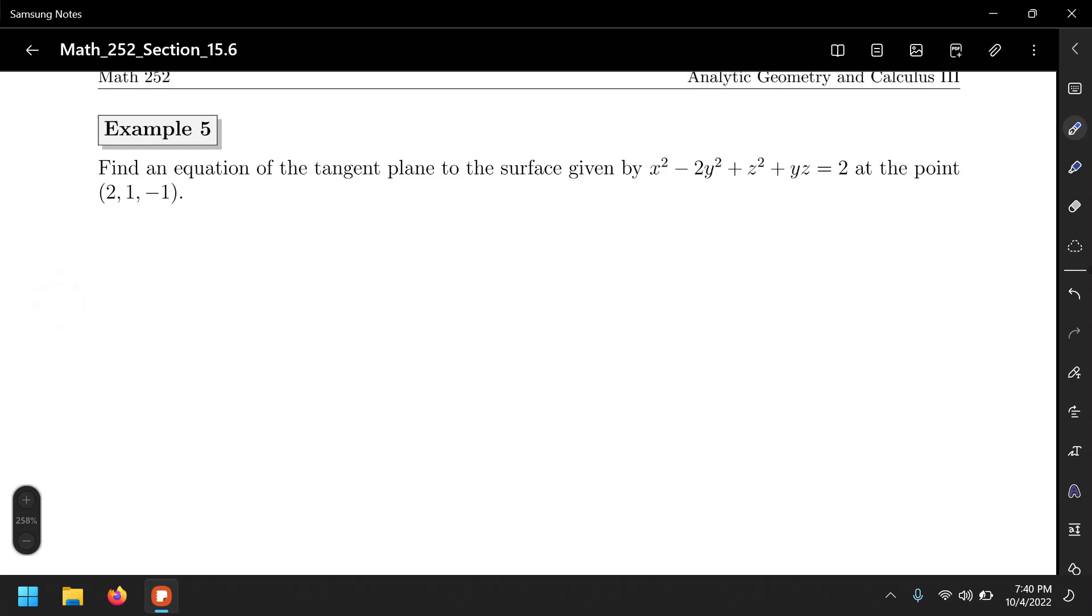Alright, let's have a look at this one. So, number one, let's define this big F function: F equals x squared minus 2y squared plus z squared plus yz minus 2. Well, of course, that's equal to 0.